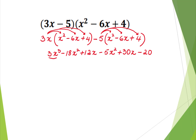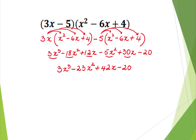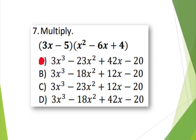3x cubed is all by itself. Negative 18x squared plus negative 5x squared gives negative 23x squared. Positive 12x plus 30x gives positive 42x. And only negative 20 is left. The correct answer is A.